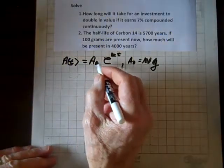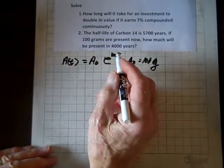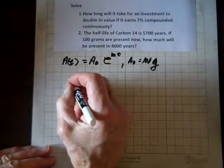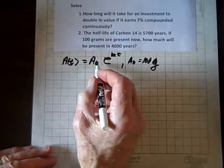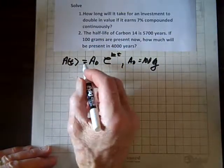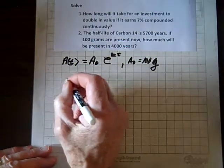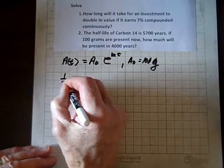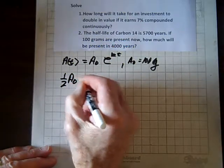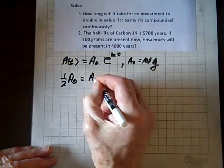So we know the half-life is 5,700 years. So in 5,700 years, half of this amount will be left.